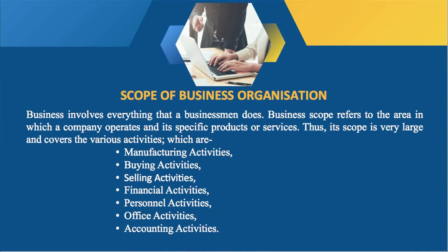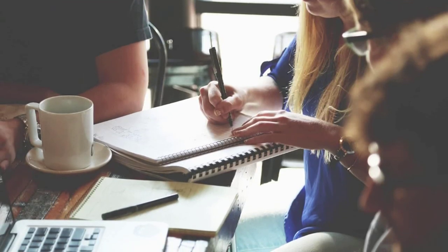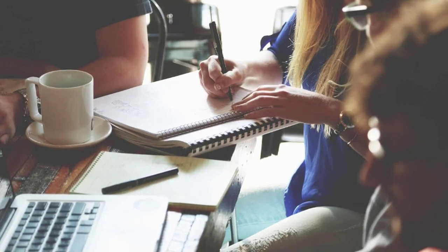Next is the office activity. An office is like the central hub for any business, making sure that everything runs smoothly. The office also takes care of communicating with the company and keeping assets safe and well documented. Next is the accounting activity. In any business, the accounting department is responsible for keeping track of all the transactions that happen in the business. Essentially, it is the financial watchdog, making sure the company knows exactly where it stands in terms of money matters.